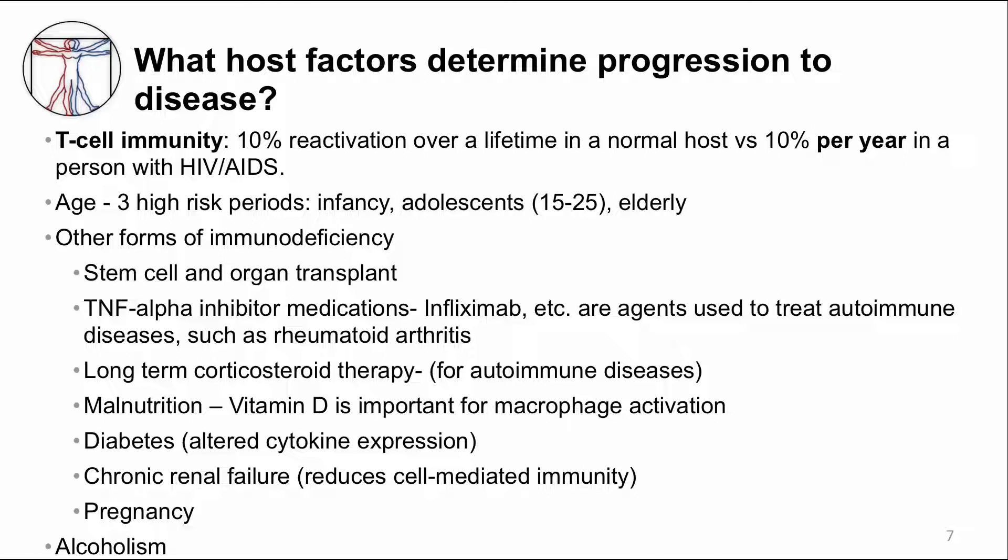Age is another differentiating factor. There are three high-risk periods for higher risk of progression to TB disease: infancy — those less than 12 months old — adolescents, and the elderly. There are forms of immune deficiency that should be considered when assessing risk of progression to TB disease. Several are listed on the slide, and these people have a higher risk of progressing to TB disease compared to an otherwise healthy person.